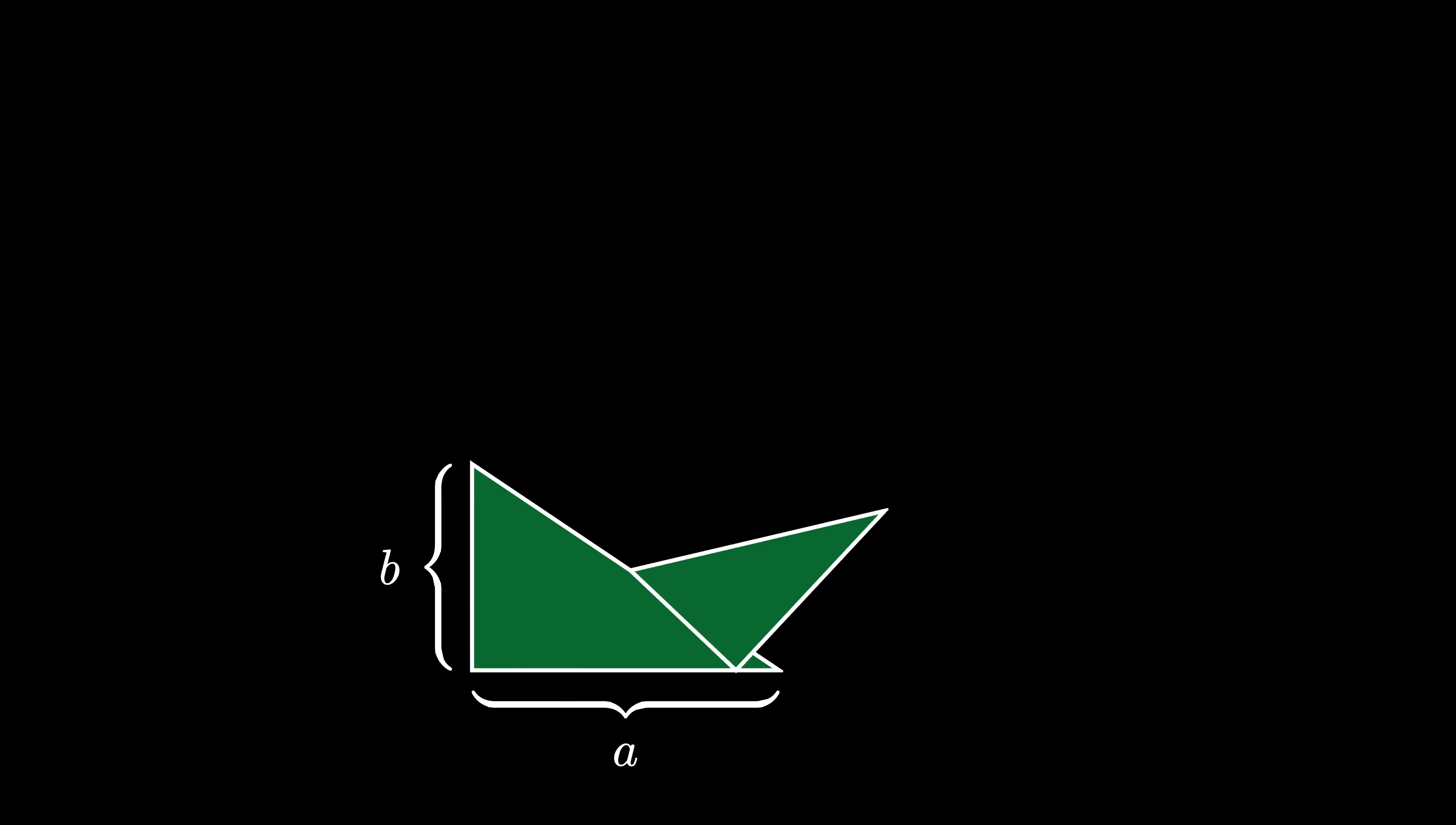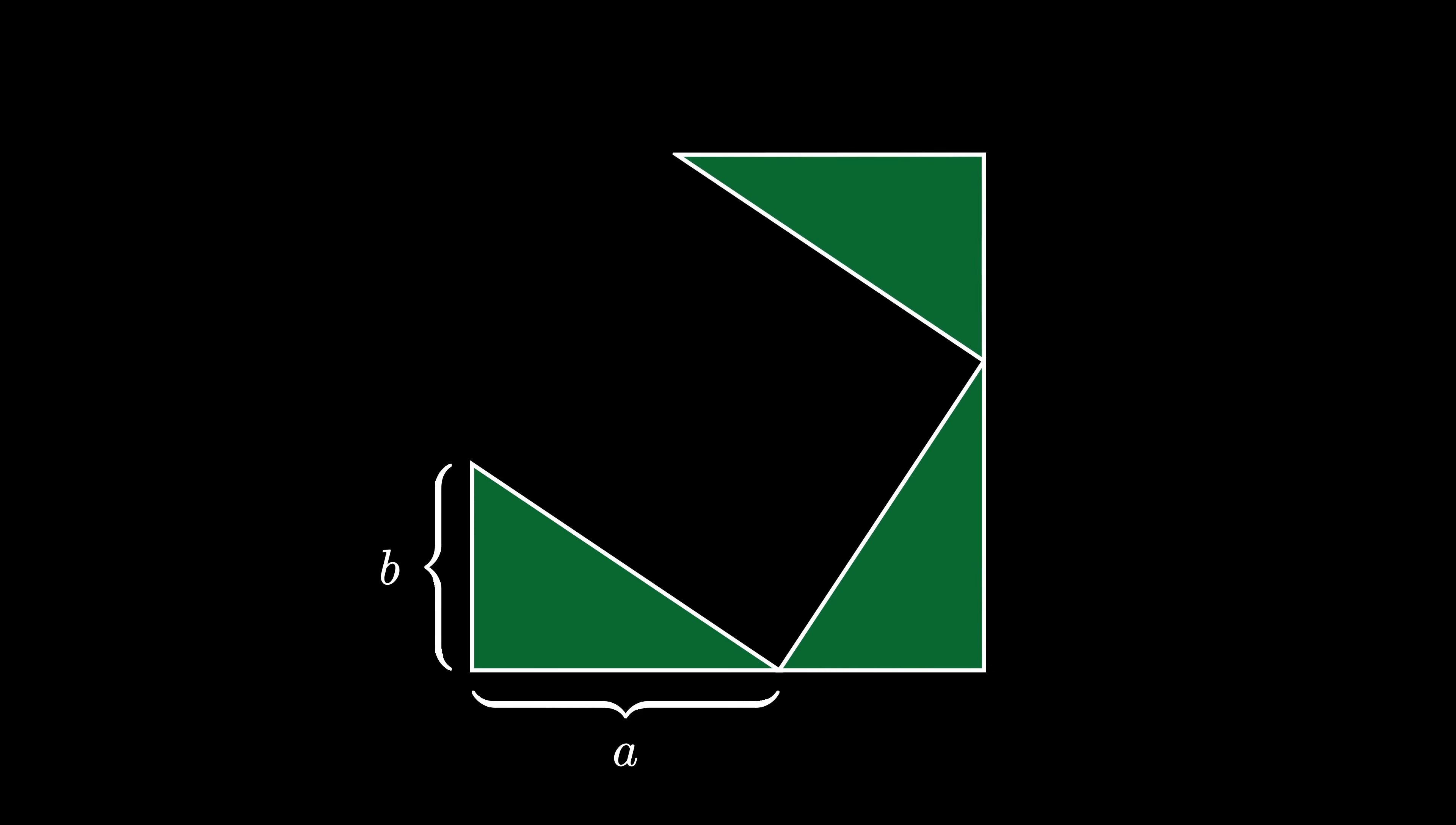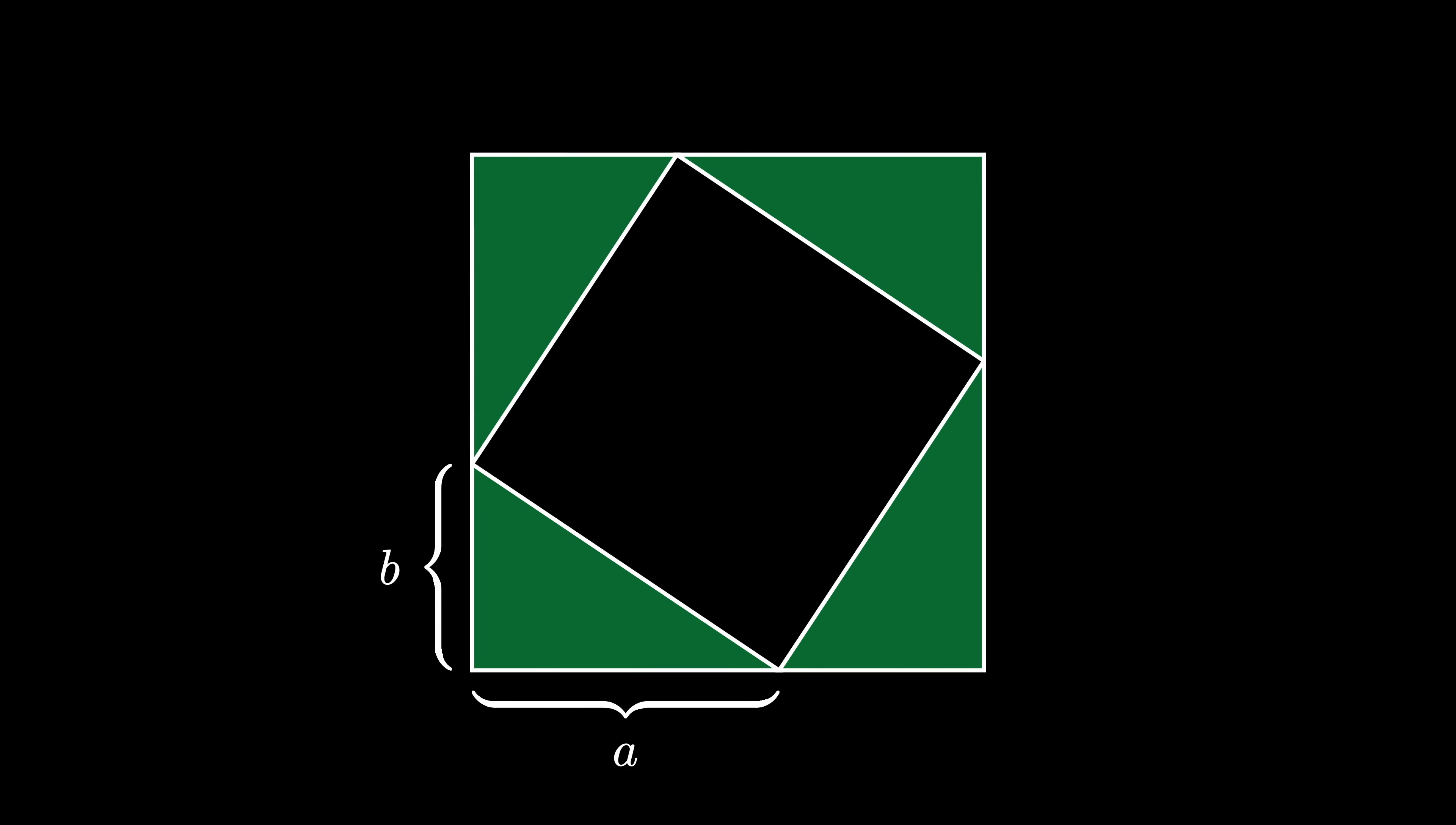Start with a right triangle with legs of length a and b. Use 4 copies of the triangle, rotated, so that we create this shape, which is a square with a side length of a plus b.